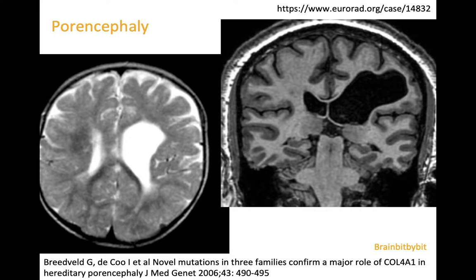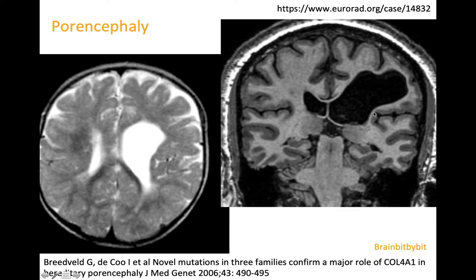The differential diagnosis is poroencephaly, which also occurs in patients with a COL4A mutation, because they have a problem with the basal membrane of their blood vessels, so they're more prone to vascular insults. And if the damage happens later, there's loss of brain tissue, but then the cleft is lined by gliotic white matter. So in schizencephaly, the problem occurs early and the cleft is lined by dysplastic gray matter, whereas in poroencephaly there's gliotic white matter, because the insult has happened later.